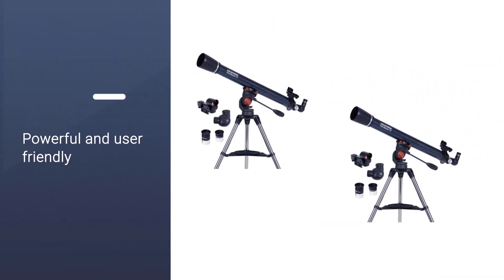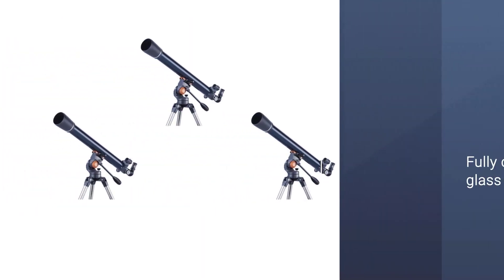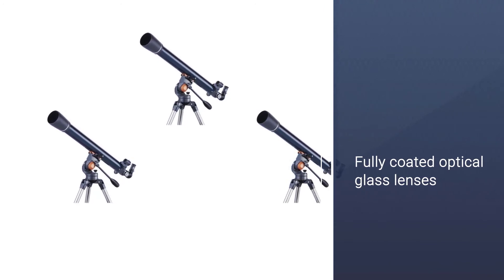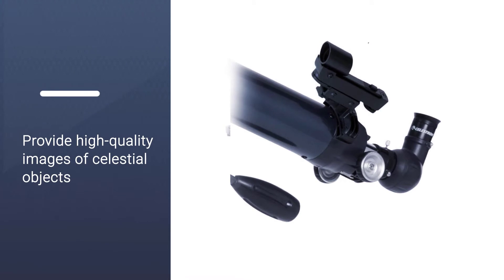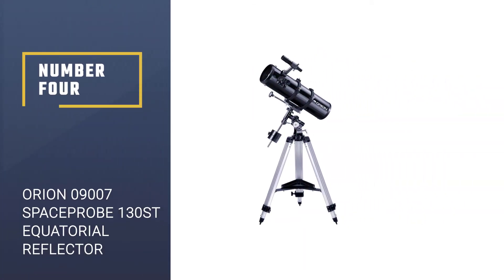The Celestron 70 AZ is a powerful telescope and is user-friendly. It has fully coated optical glass lenses that provide high quality images of celestial objects. The telescope comes with an adjustable tripod that is sturdy yet lightweight. It is easy to assemble and store. You can take it anywhere effortlessly for land viewing or stargazing.